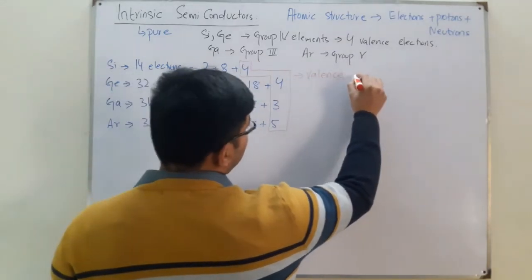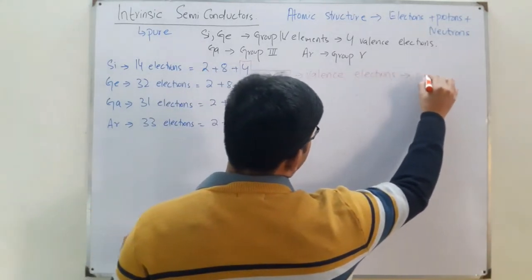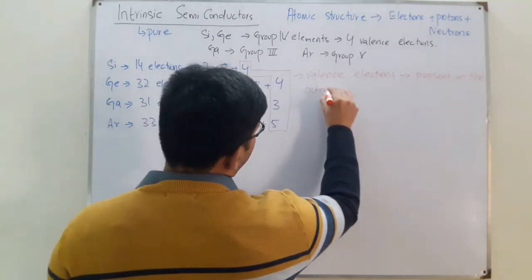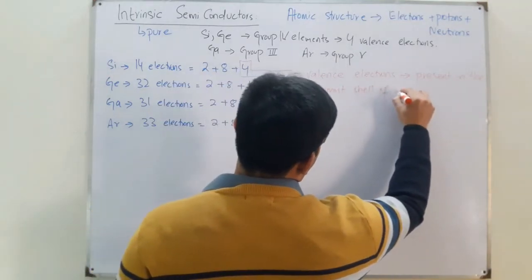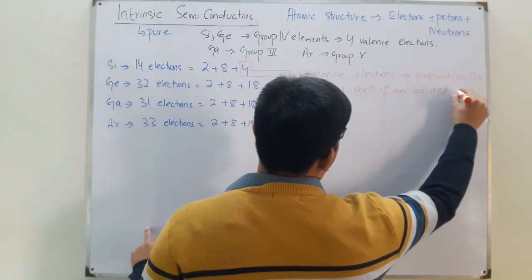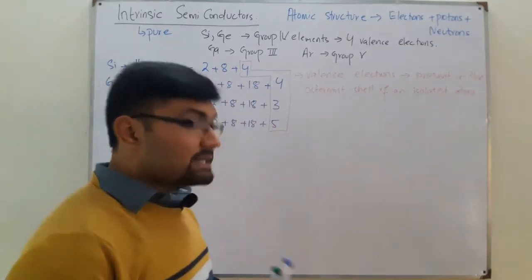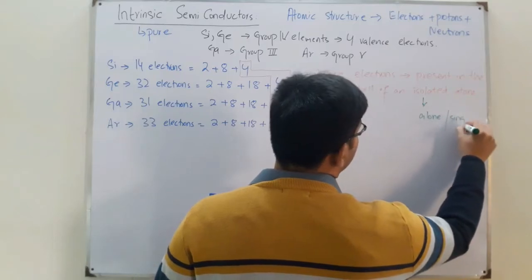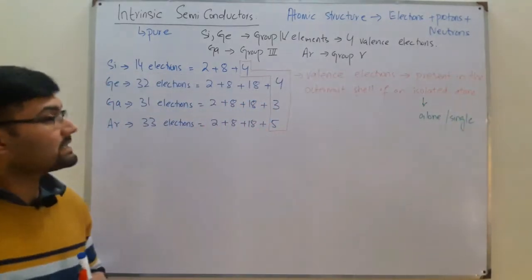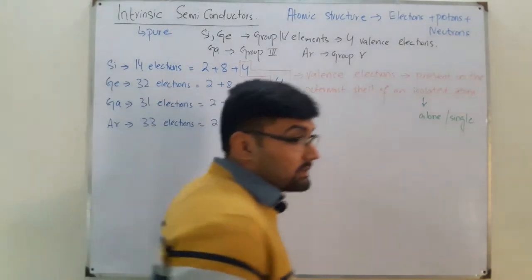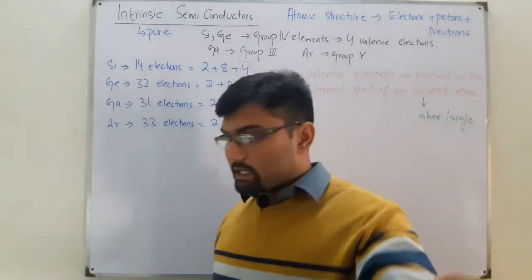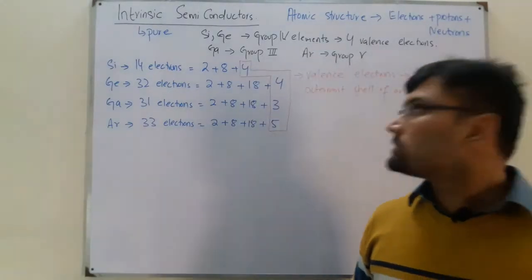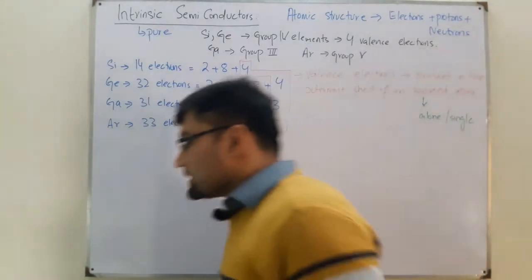Valence electrons are the electrons present in the outermost shell of an isolated atom. The term 'isolated' means a single atom considered alone. But an atom is not always present singly — mostly we don't have isolated atoms; we have them in a molecular structure, crystal structure, or lattice structure.